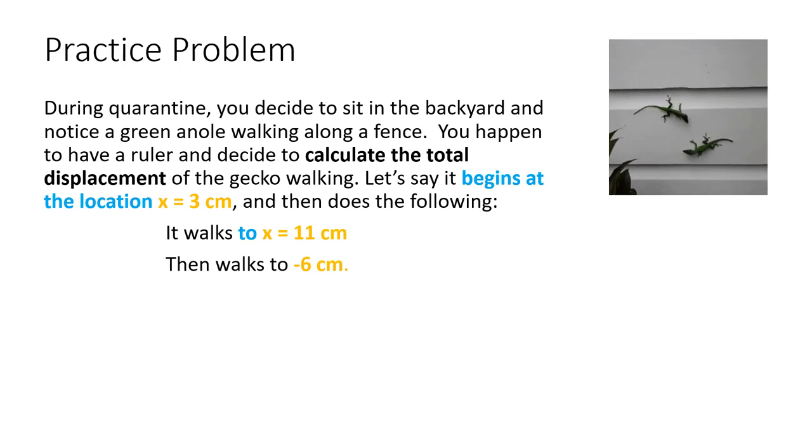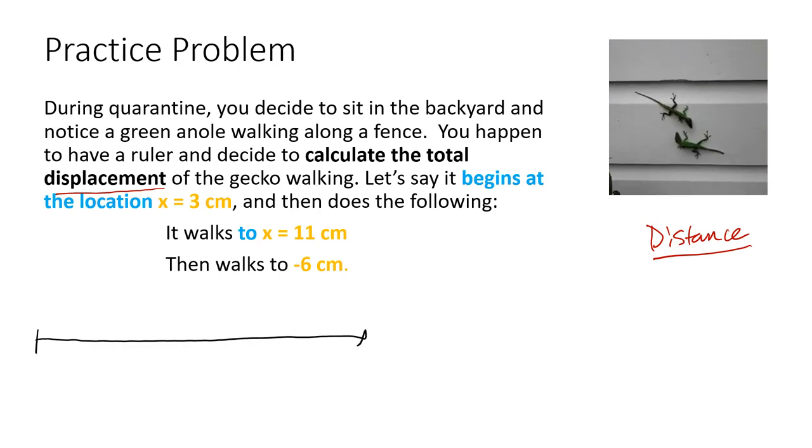In this problem, we are trying to calculate displacement, which is different from distance, which I'll talk about later on. During quarantine, you sit in the backyard, you notice a green anole walking along a fence, you happen to have a ruler out, and you decide to get its displacement. So let's say it begins at a location x equals 3 centimeters. So let's kind of have our own little ruler. Crudely, let's say that this is 0 centimeters, 1, 2, 3. So let's say it starts off right here.